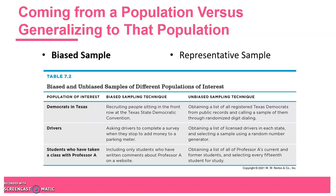In order to generalize, you want your sample to be as representative of that population as possible, so you want to sample through unbiased means. For example, if you want to make an inference about Democrats in Texas, a biased technique would be recruiting people sitting on the front row at the Texas State Democratic Convention — those are probably going to be pretty ardent Democrats and not representative. Instead, obtaining a list of all registered Democrats in Texas and calling a sample through unbiased digit dialing would give you a less biased sample. People can still volunteer to respond or not, so it's not totally random, but it's at least better than the biased approach.